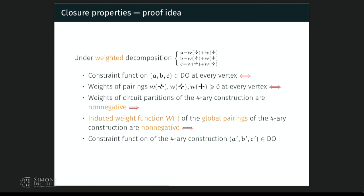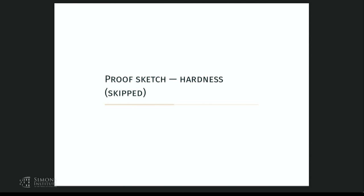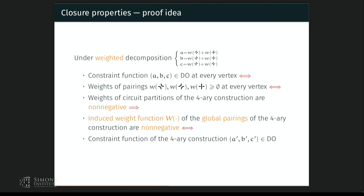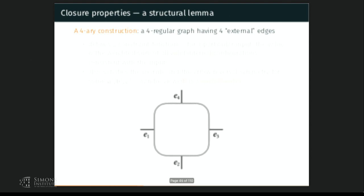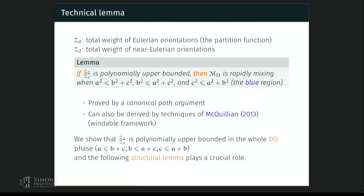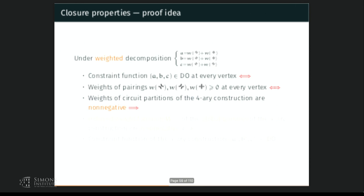I will skip the proof sketch for the hardness part, but we use an approximation-preserving reduction. In response to a question: the polynomial boundedness of Z₂/Z₀ alone is not sufficient to prove the FPRAS — it must be combined with the technical lemma. Our technical lemma says if Z₂/Z₀ is polynomially bounded then the chain is rapidly mixing, but more work is needed for the full FPRAS. For the hardness part, we use an approximation-preserving reduction from maximum independent set on three-regular graphs.